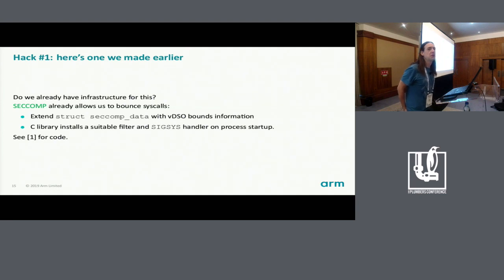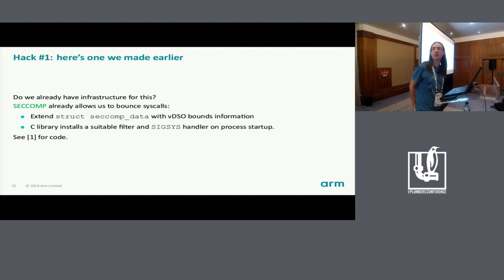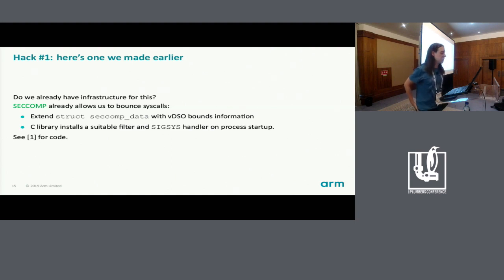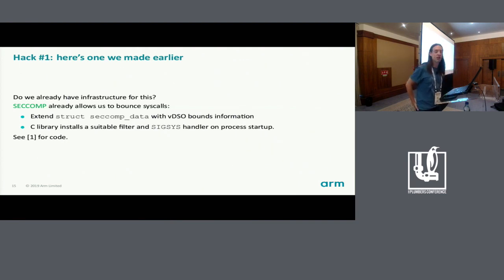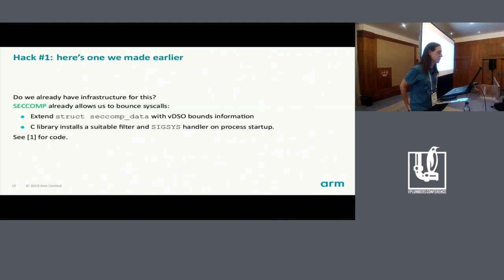Mentioning this to people, the first thing they tended to say was: doesn't seccomp do that sort of thing? So I thought I would experiment and see what I could build on top of that. Seccomp gives us the ability to filter system calls and decide whether to allow the kernel to execute them or just trap them back out to user space using a signal. To filter syscalls based on where in user space they came from, we need some information about what's in the user space address space. I extended the seccomp data structure with some bounds information to tell us where the VDSO is. The C library would install a suitable filter and a handler for this signal on process startup — that has a world of issues, but this was just a hack to see what we could get working.